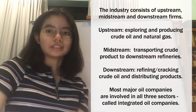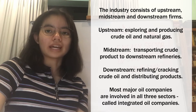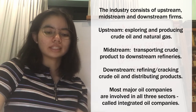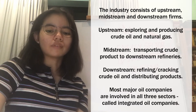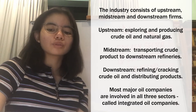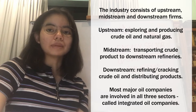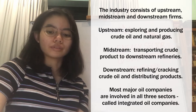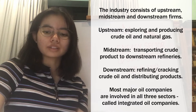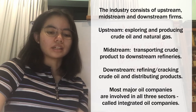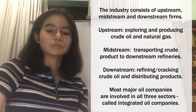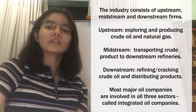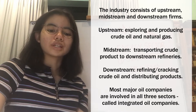The oil and gas industry is divided into three primary categories: upstream, midstream, and downstream companies. Upstream operations involve exploration and production of crude oil and natural gas, where companies identify oil deposits and extract or frack crude oil from wells. In the midstream sector, the crude petroleum product is transported to downstream refineries by pipeline, rail, oil tanker, or truck, or otherwise stored.